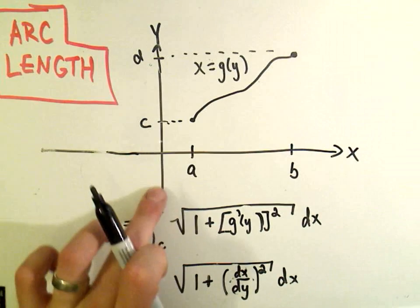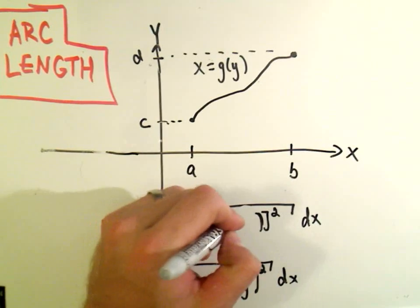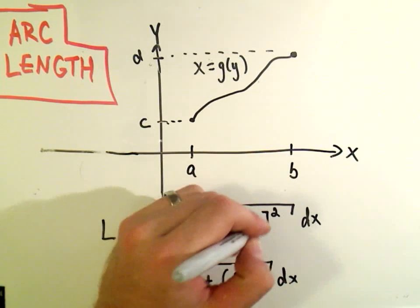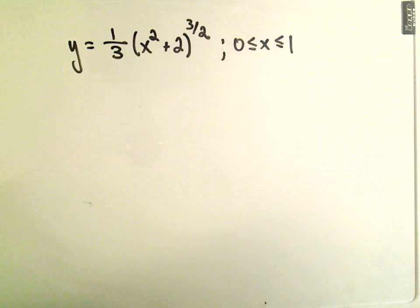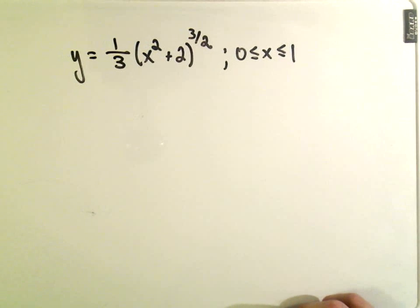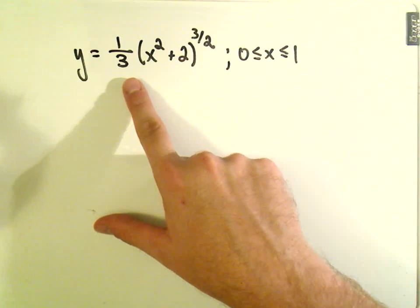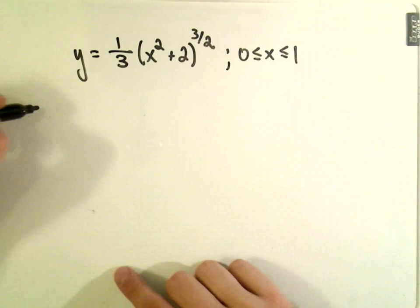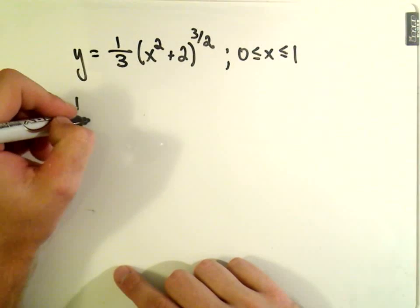I think most of my examples are going to correspond to my first case. Actually, I think both of them are. There's nothing real deep or complicated if you switch them out. Let's do an example here. We want to find the length of the curve one-third x squared plus 2 raised to the 3 halves between x equals 0 and 1.